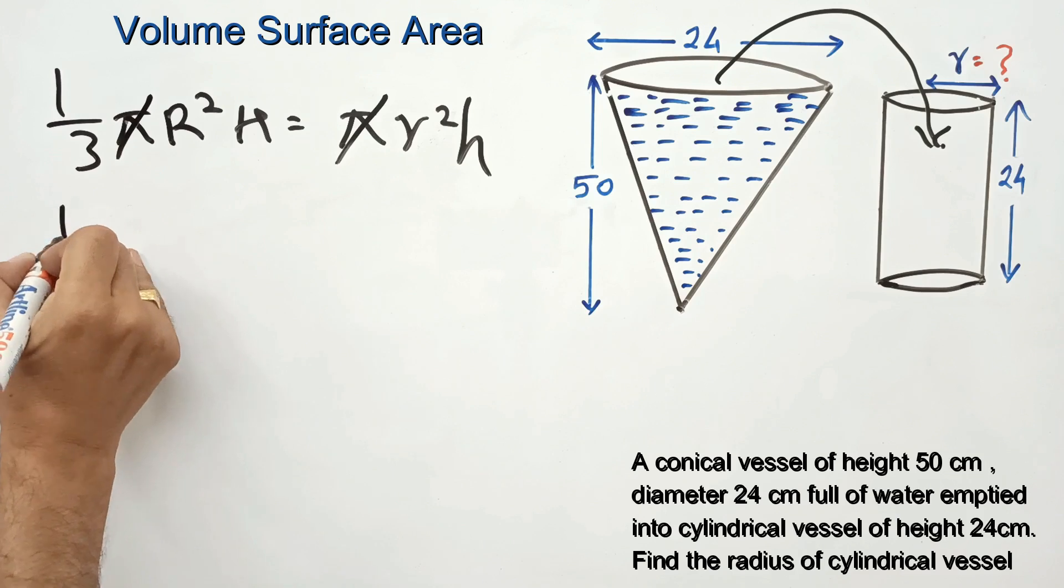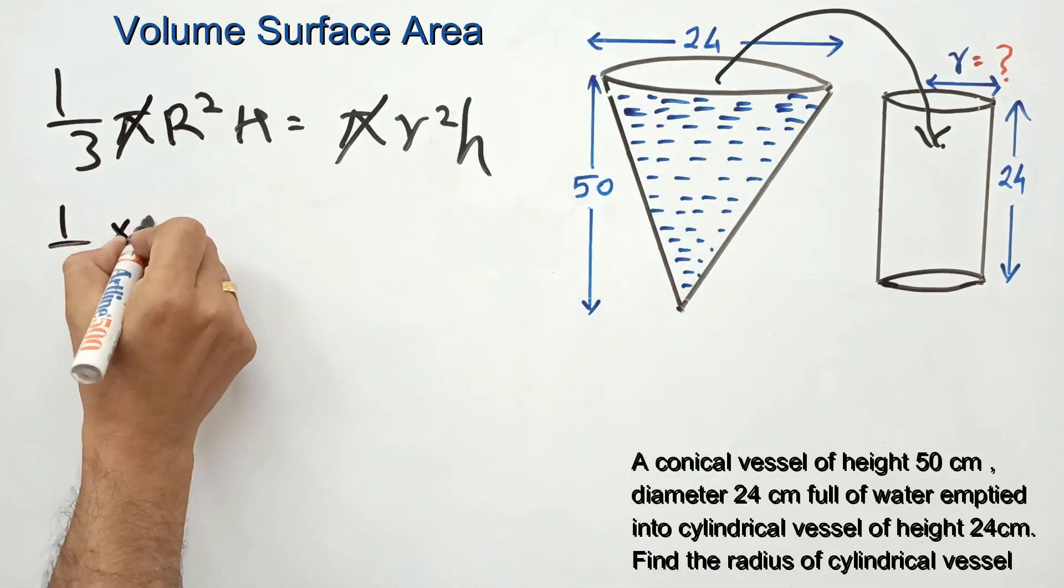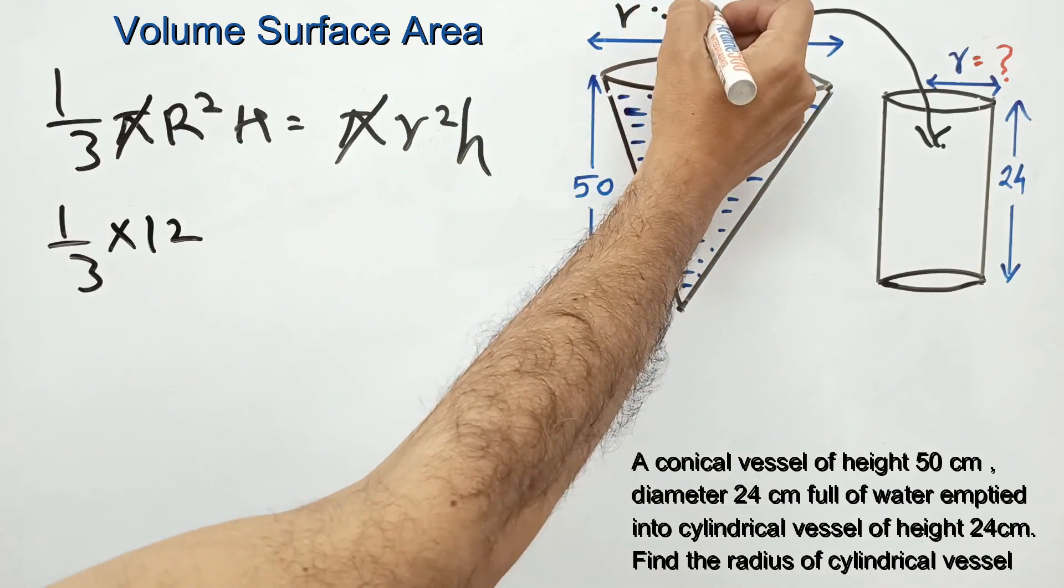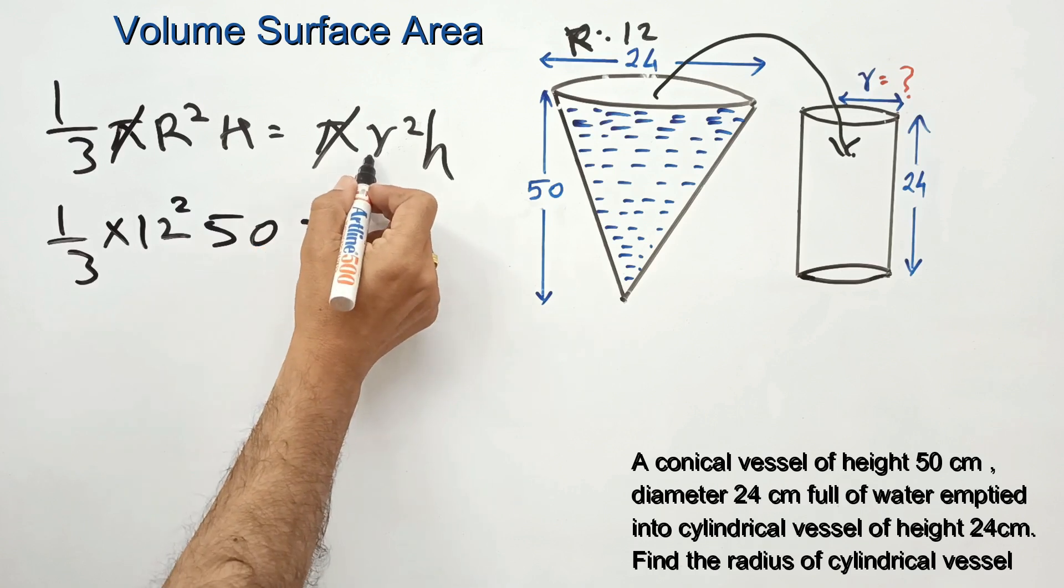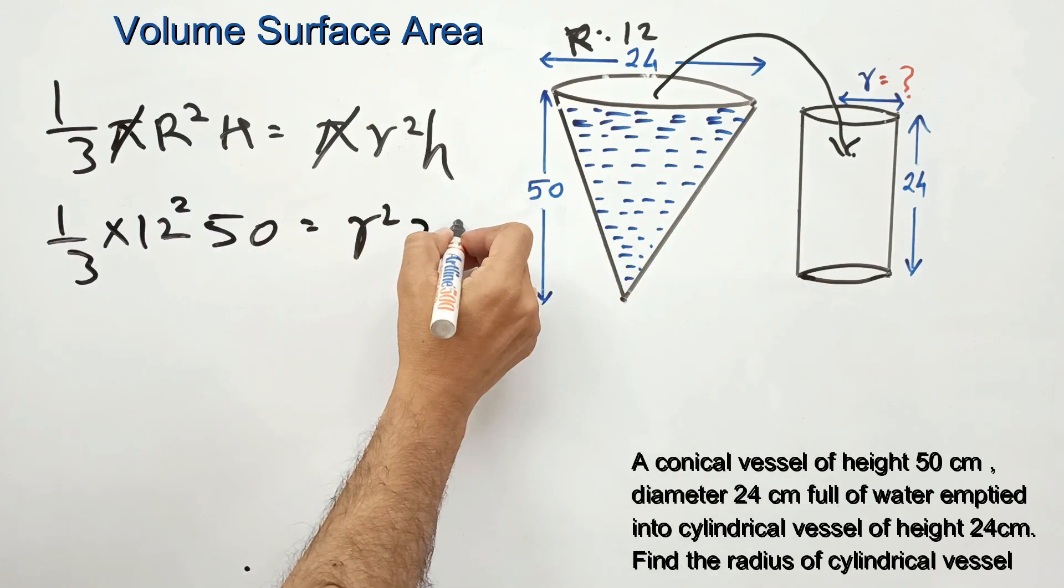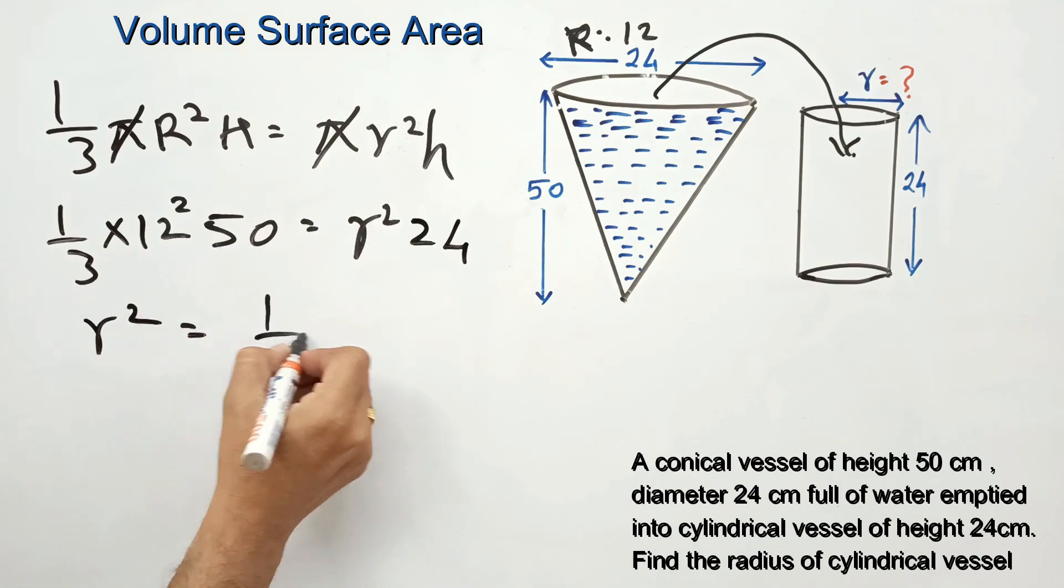cancel the pi. One-third pi R squared H equals pi r squared h. The radius of the cone is 12 (diameter is 24), height is 50. This equals the volume with radius we need to find, and height of cylindrical vessel is 24. I am writing directly by cross multiplication: